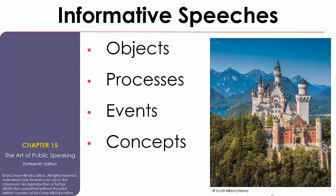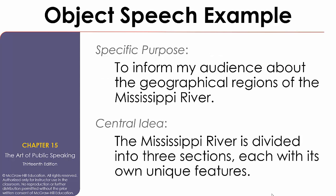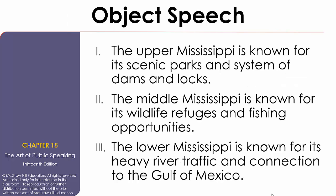Looking at our four types, let's take them one at a time. An informative speech about an object deals with anything that is visible, tangible, or stable in form. Think of them as nouns: people, places, and things. For instance, in a speech on the Mississippi River, the specific purpose would be to inform my audience about the geographical regions of the Mississippi River. The central idea would be that the Mississippi River is divided into three sections, each with its own unique features. The main points are the Upper Mississippi, the Middle Mississippi, and the Lower Mississippi — each developed into its own main point. Don't try to make it hard.